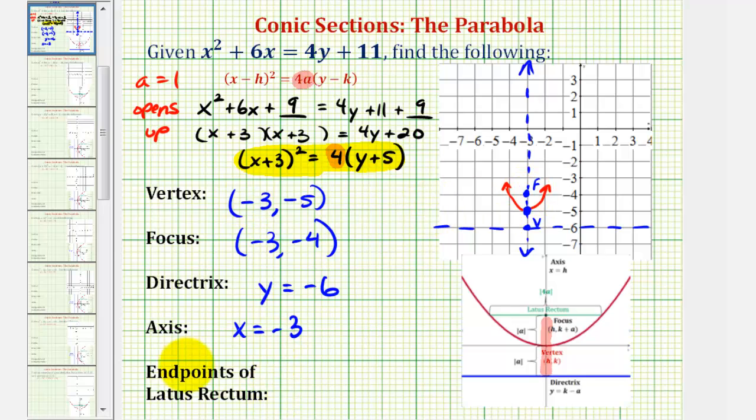And then, finally, we'll find the endpoints of the latus rectum, which will give us two more points on the parabola, so we can then sketch a more accurate graph of the parabola. So, the latus rectum is this segment here, where the midpoint is the focus, the two endpoints are on the parabola, and the latus rectum is parallel to the directrix. More importantly, it has a length equal to the absolute value of 4a. So, looking at our equation, notice that 4a is equal to 4.